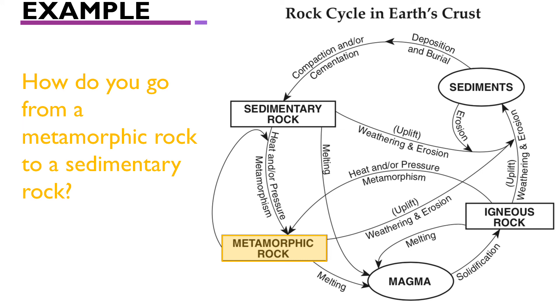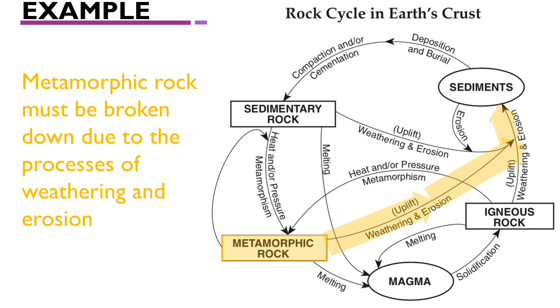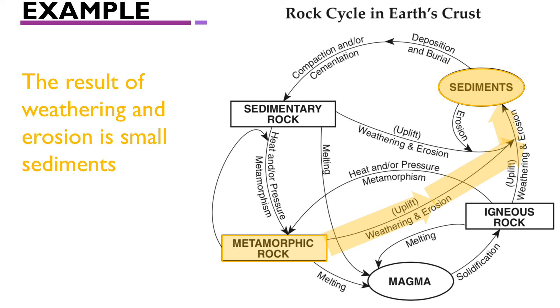The first step is to start in the box for the rock you're starting with. We start with metamorphic rock and follow the arrows to get to sedimentary rock. Ultimately, that metamorphic rock needs to be broken down into pieces of sediment through weathering and erosion. Follow those arrows up until you get to the sediment ingredient. If metamorphic rock is broken down into smaller pieces, that's how you create sediments.